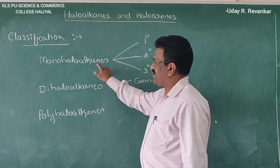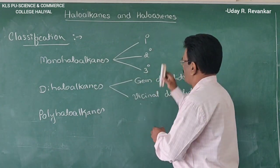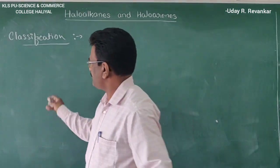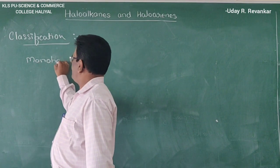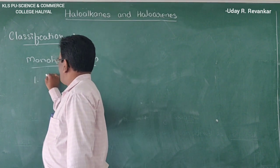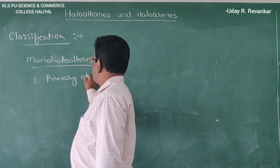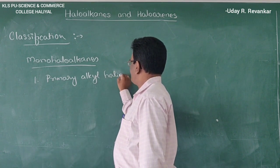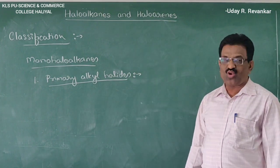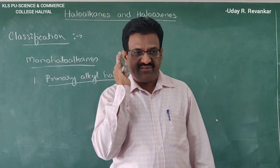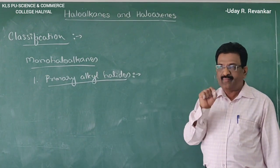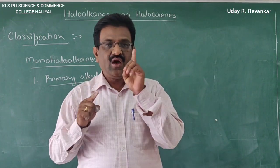We will discuss primary, secondary, and tertiary — these are also called monohalides. Primary haloalkanes are those haloalkanes in which the halogen atom is attached to a primary carbon atom. A primary carbon atom is one that is attached to only one other carbon atom, or is present alone.